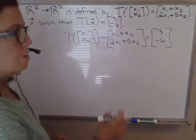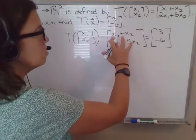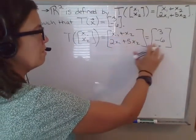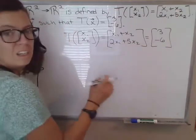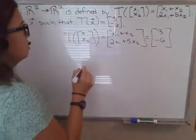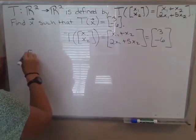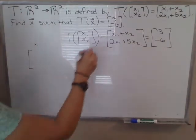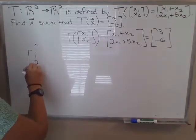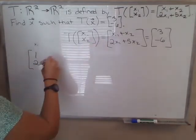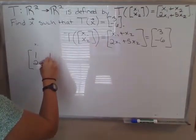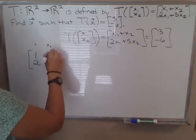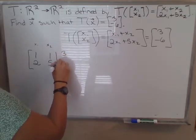So that corresponds to a system of equations: x1 plus x2 equals 3, 2x1 plus 5x2 equals negative 6. And that system of equations would then correspond to the augmented matrix. This is our x1 column, so coefficients of x1 are 1 and 2. And then our x2 column, so coefficients of x2 are 1 and 5. We want that to equal our constant column, 3, negative 6.